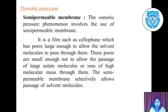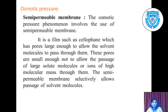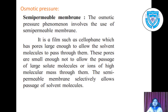Now the last colligative property we are going to see is osmotic pressure. In osmotic pressure, the very first concept is the semi-permeable membrane. Semi-permeable membrane is a film such as cellophane which has pores large enough to allow solvent molecules to pass through, but small enough to block large solute molecules or ions of high molecular mass. A semi-permeable membrane selectively allows only the passage of solvent molecules, not solute molecules.